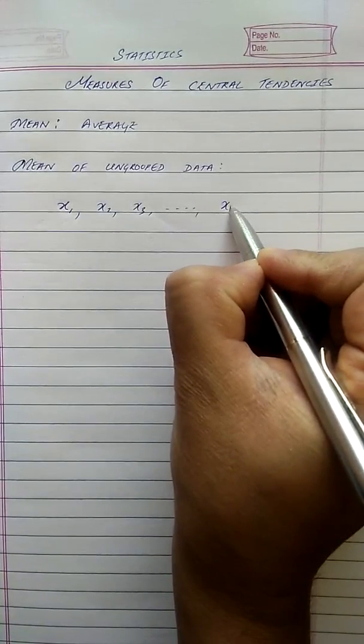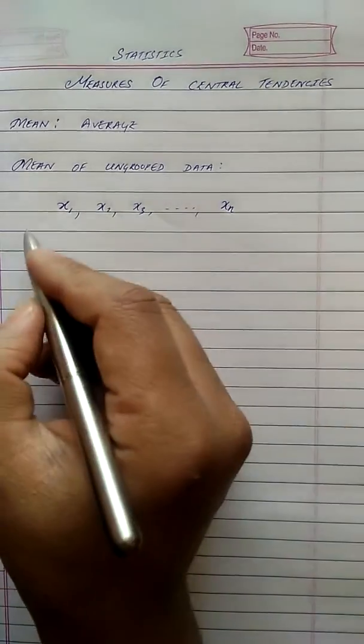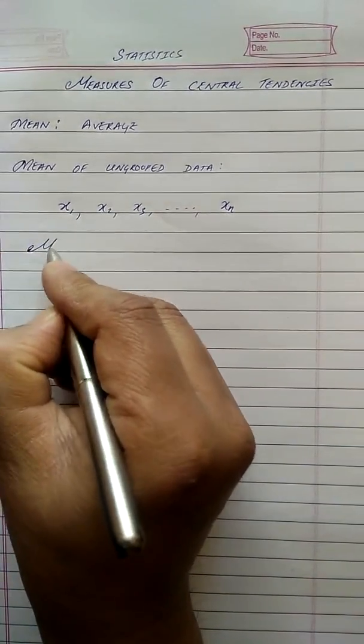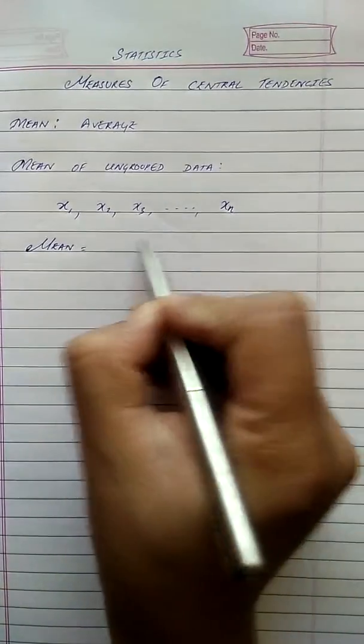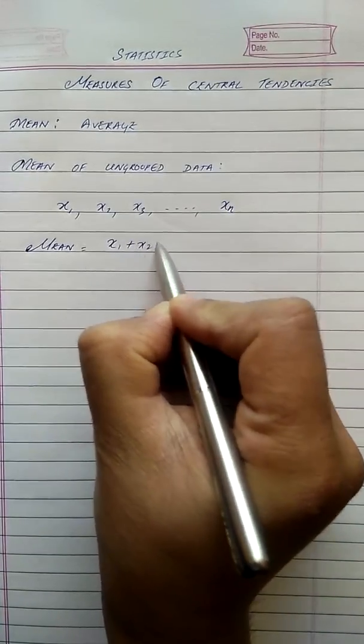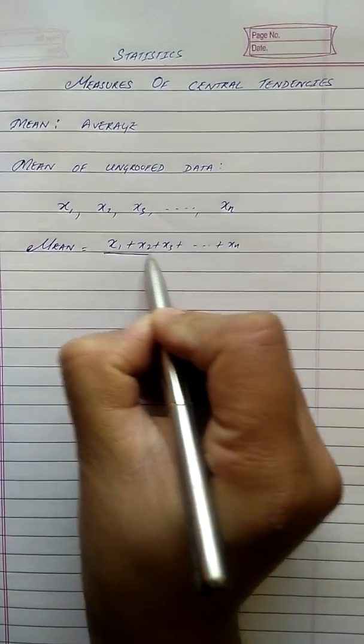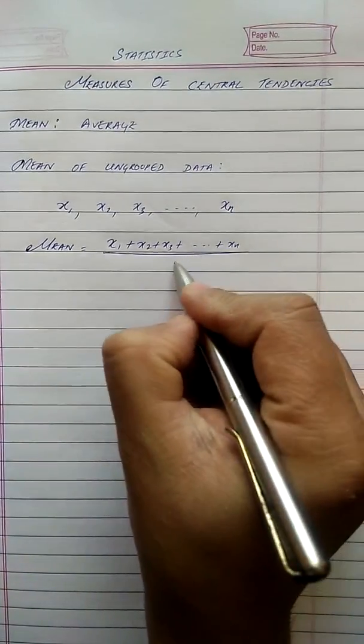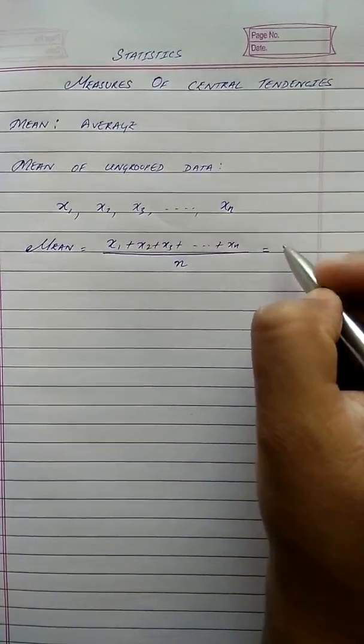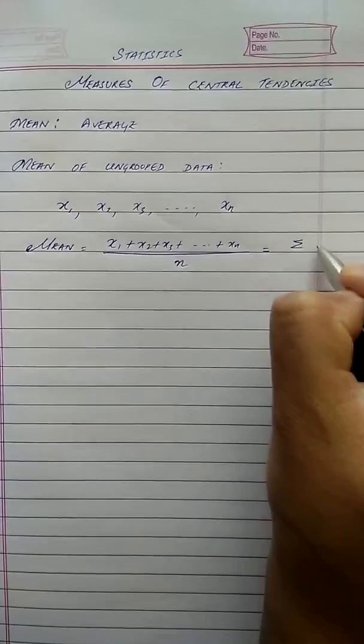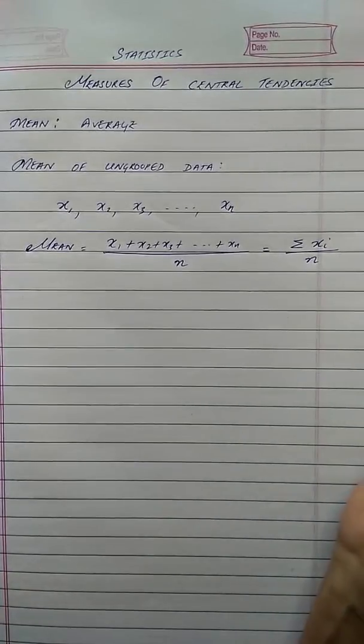If x₁, x₂, x₃ up to xₙ be the ungrouped datas, then in order to find the mean we are going to use the formula: mean equals sum of all these variants, that is x₁ plus x₂ plus x₃ plus till xₙ, whole divided by the number of variants. In this case the number of variants is n. It can also be written as summation of all the variants divided by the total number of variants.